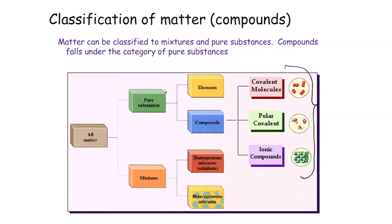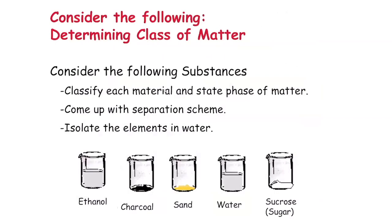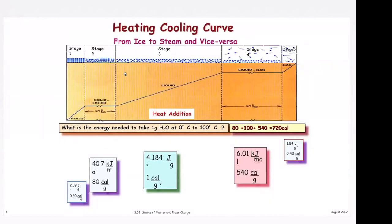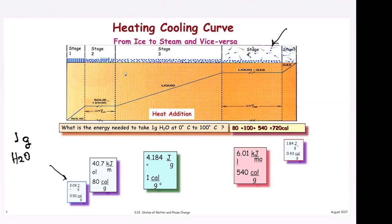We'll look at matter classification more closely in chapters 5 and 6 when naming compounds. The heating-cooling curve shows different diagrams of water at the atomic level and the energy needed per gram of H₂O. The strategy for these problems: if a question gives you 25 grams, calculate for one gram first, then multiply by 25 at the end — that's the simplest approach.